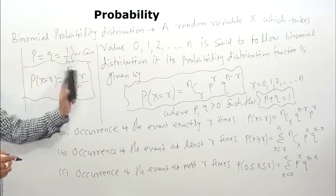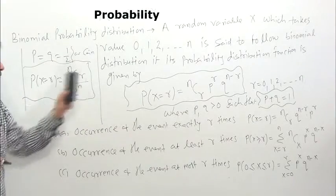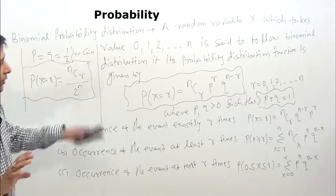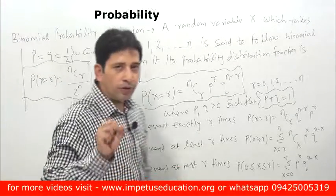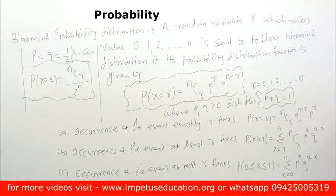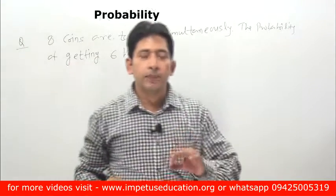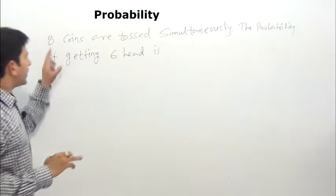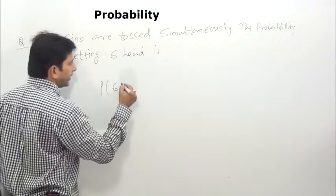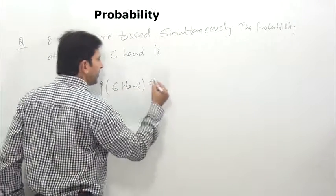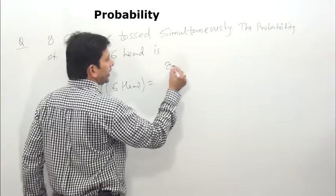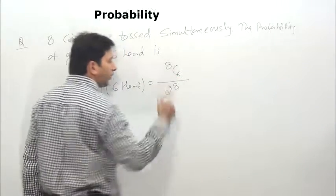When P = Q = 1/2, you can always use the Binomial Distribution directly. Now for this question — the probability of getting 6 heads — with 8 coins, n = 8. Since p = q = 1/2, we apply the formula straightforwardly.